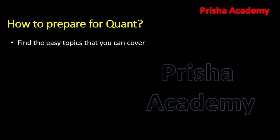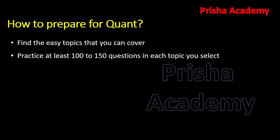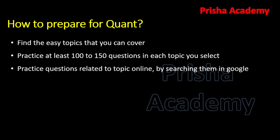Now, how to prepare for quant: find the easy topics from those prominently asked in Grade B, select some topics, and try to solve the easy ones first. Then practice at least 100 to 150 questions in each topic you select — that should be the minimum. Practice questions related to topics online by searching them on Google. Even if you know everything, you will not be able to clear the quantitative section without doing this practice.